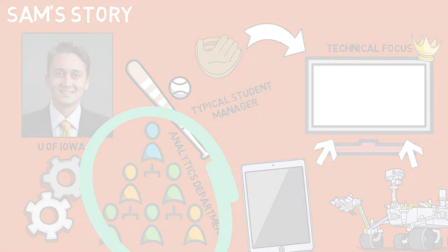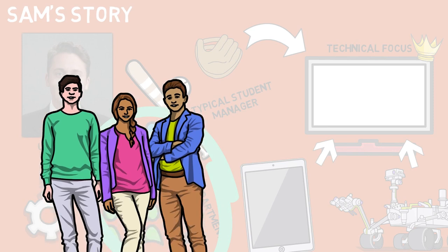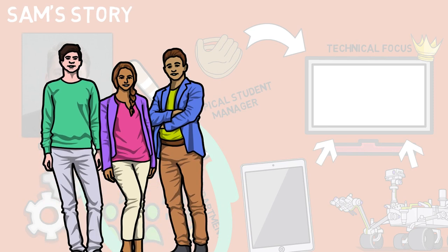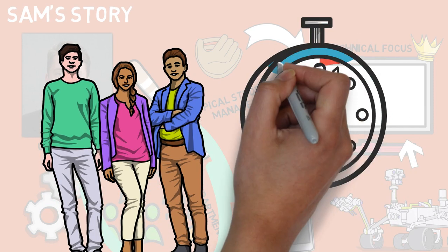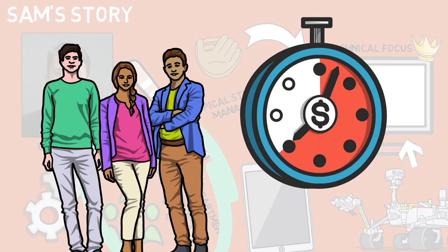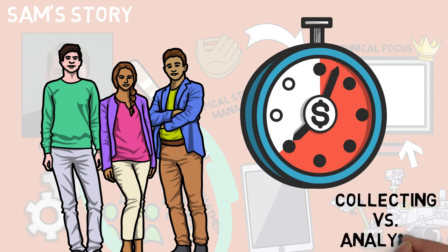My favorite part about this entire segment is near the end where Sam touches on the role of data analysts in baseball. You only have so much time to make an impact on your team, and you can either spend that time collecting and cleaning data or you can spend that time analyzing it. The first portion is definitely essential, but it's not the area where you can make a major impact. That comes when you're able to spend time researching and analyzing that information for the team.